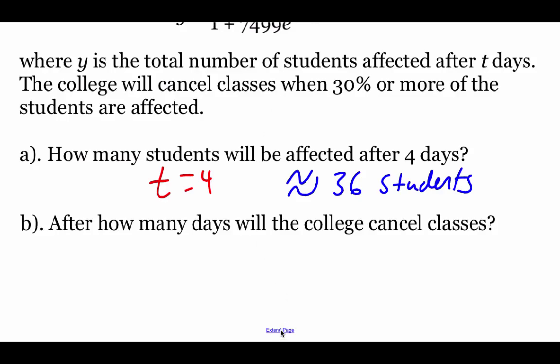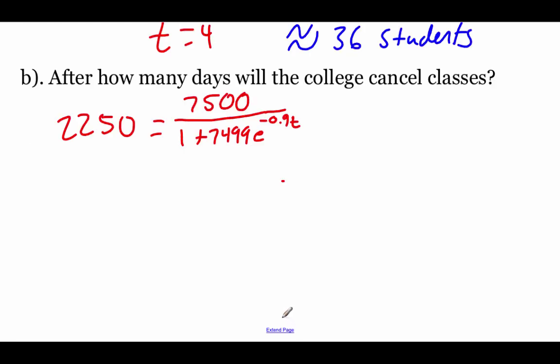Taking a look at the next part, we're going to figure out how many days it's going to take the college to cancel classes. Remember earlier, we said that they'd cancel if 30% or more of the students are affected. So the first thing we should do is figure out what 30% of that original 7,500 is. If you check it out on your calculator, you're going to get 2,250. So what we're going to do is set that equal to our 7,500 over 1 plus 7499 e to the negative 0.9 t power. And what we have to do is go through and solve for this t value. Now I don't like this fraction look, so what I'm going to do is take this denominator and multiply it over to the other side.